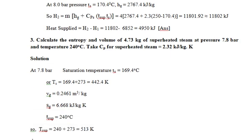Third numerical: based on entropy. Calculate the entropy and volume of 4.73 kg of superheated steam at a pressure of 7.8 bar and temperature of 250 degrees Celsius. Take Cp for superheated steam as 2.32 kJ per kg·K. The main objective is to find the specific entropy (sf) and total volume. Given: mass = 4.73 kg, pressure = 7.8 bar, temperature = 250°C.